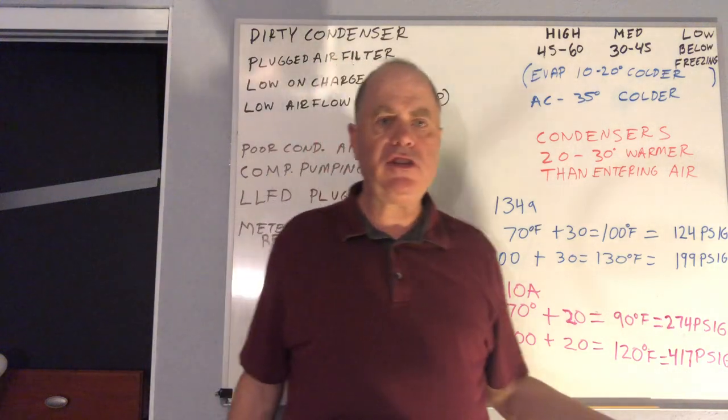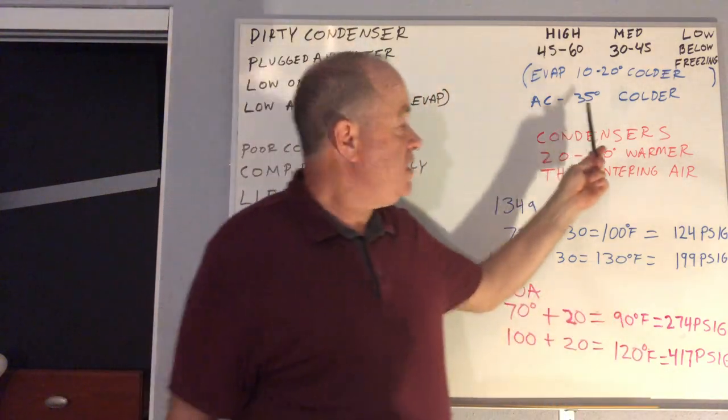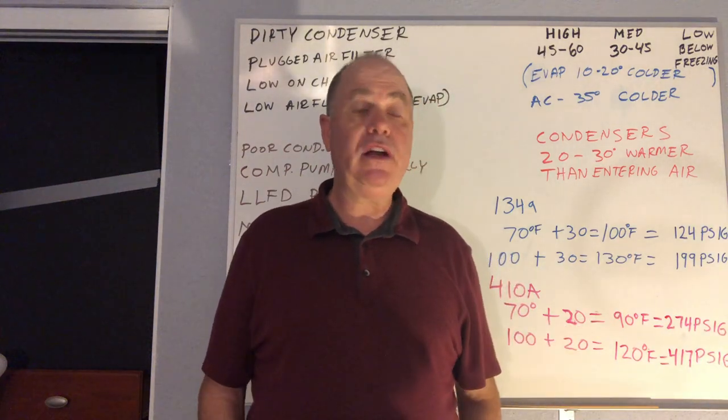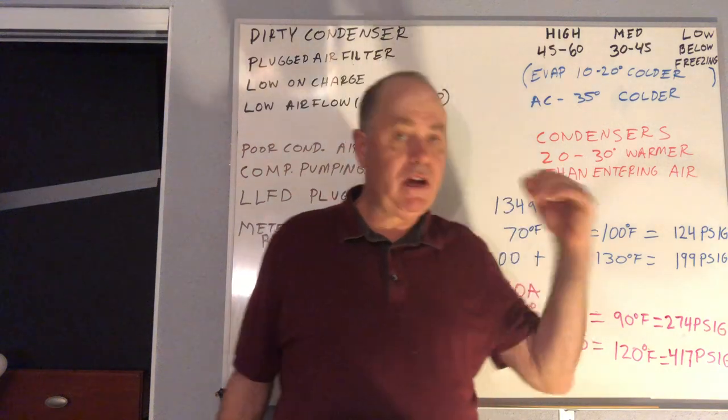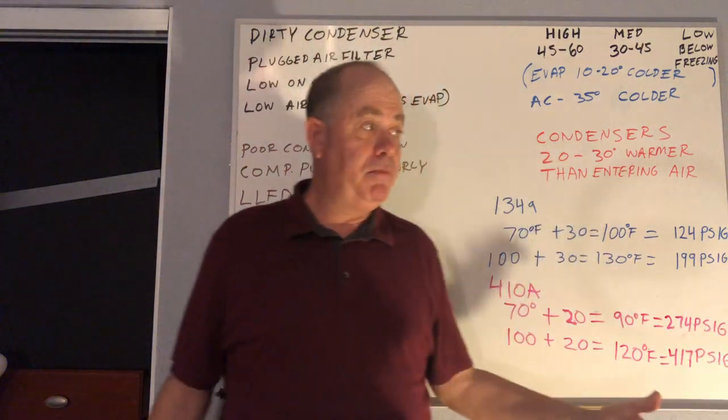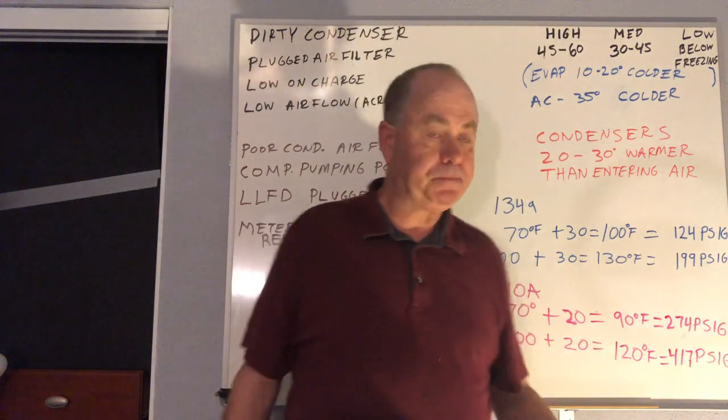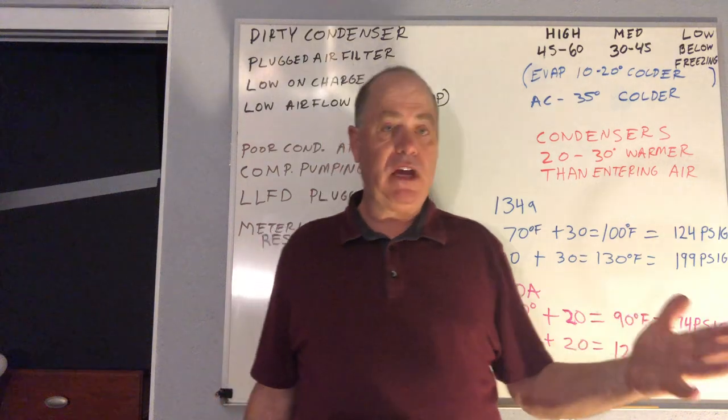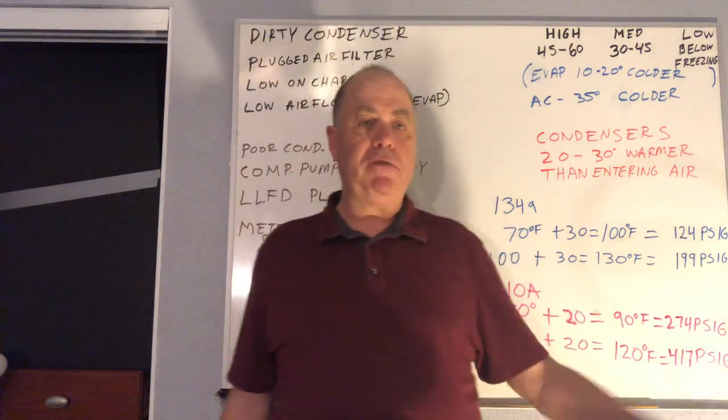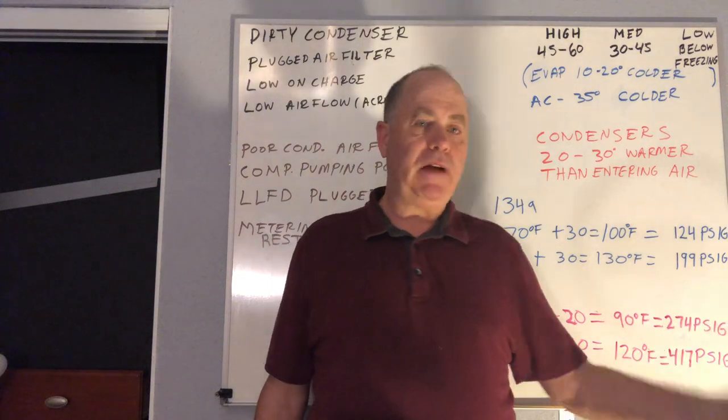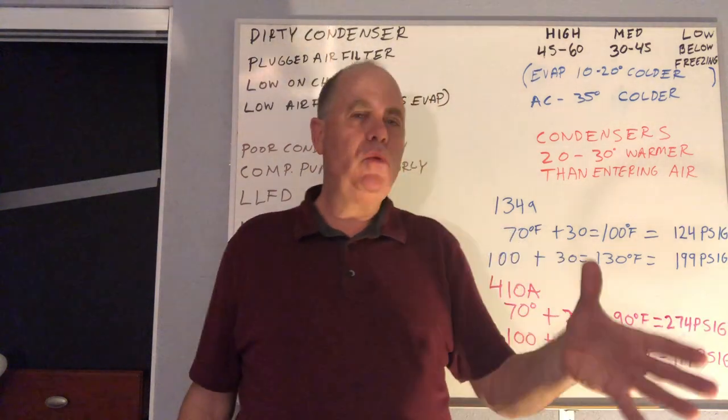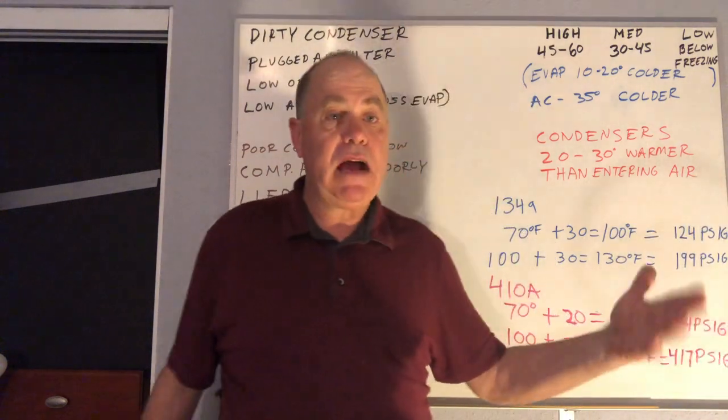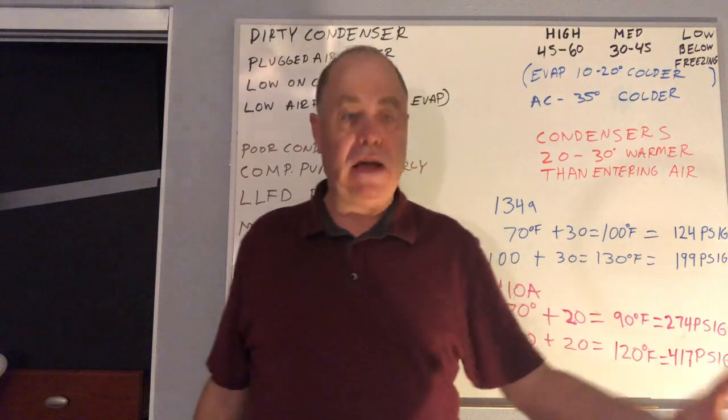Now in air conditioning, the evaporator is usually around 35 degrees colder than the air entering it. So that if you have air coming into the evaporator from a building or a room, that mixed air, and it's 75 degrees, the evaporator is probably operating at 40 degrees, 35 degrees colder. And if the unit's been off or broke down and it's 80 degrees in there, then the evaporator would be closer to 45 degrees.